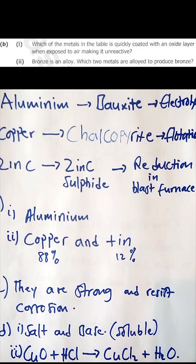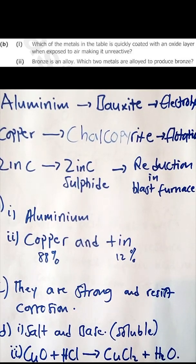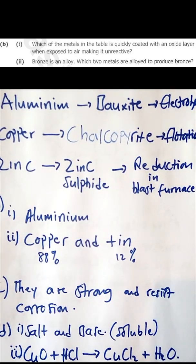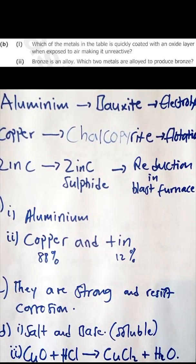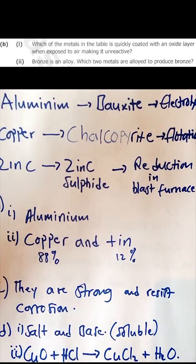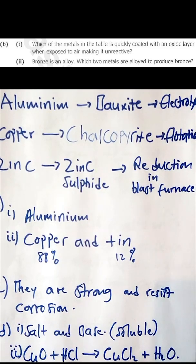Question b: which metal is quickly coated with an oxide layer when exposed to air, making it unreactive? The answer is aluminium. Although aluminium is a very reactive element on the reactivity series, when exposed to the environment it reacts with oxygen and becomes coated with an oxide layer, making it appear unreactive.